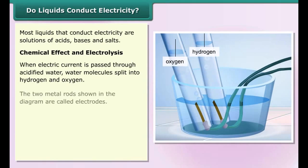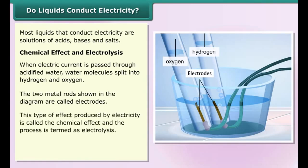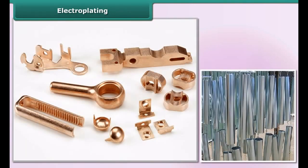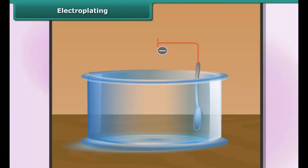Chemical effect and electrolysis: When electric current is passed through acidified water, water molecules split into hydrogen and oxygen. The two metal rods shown in the diagram are called electrodes. This type of effect produced by electricity is called the chemical effect and the process is termed as electrolysis. Can we use pure water in the place of acidified water? Find out.